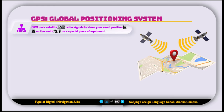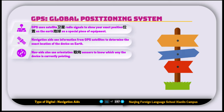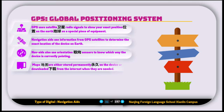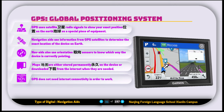The next digital device is called the GPS, or Global Positioning System. GPS uses satellite radio signals to show your exact position on the earth on a special piece of equipment. Navigation aids use information from GPS satellites to determine the exact location of the device on the earth. Navigation aids also use orientation sensors to know which way the device is currently pointing. Maps are either stored permanently on the device or downloaded from the internet when needed.